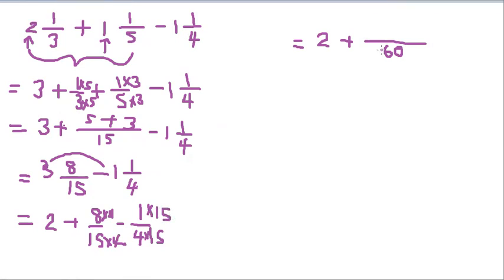Then 8 into 4 is 32 minus 1 into 15 is 15. Then 2, 32 minus 15 is 17 over 60. The final answer is this one.